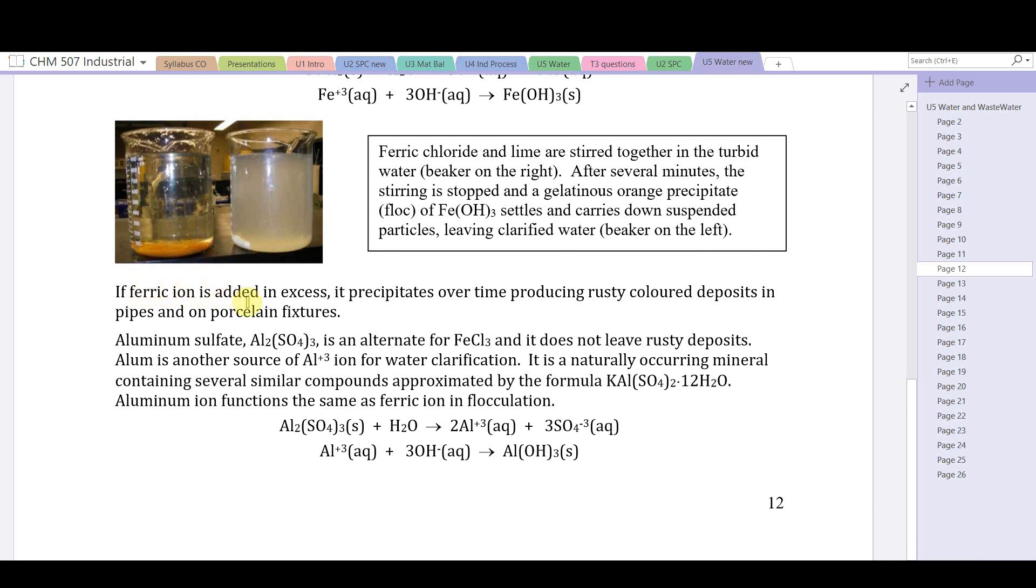If ferric ion is added in excess, it precipitates over time producing rust-colored deposits on pipes and on porcelain fixtures. For this reason, even though it seems to outperform aluminum, aluminum is preferred. Aluminum sulfate is an alternative - it does not leave rusty deposits. Alum is another source of aluminum ion for water clarification. It's a naturally occurring mineral approximated by the formula potassium aluminum sulfate dodecahydrate. It releases aluminum +3 ions. Whether it's aluminum 3+ or ferric ion, they work the same way - a polyvalent metal cation precipitates with hydroxide forming a floc that carries down the particulate, leaving clarified water.